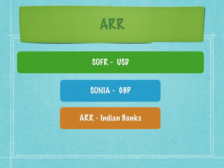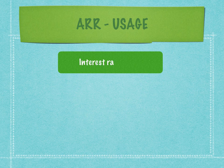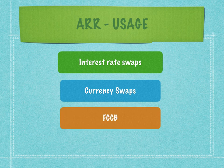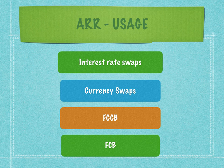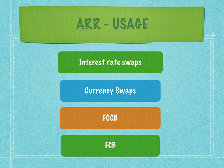Indian banks are going to use ARR — the Alternative Reference Rate. The ARR will be used by banks to value on a daily basis the MTM outstanding positions of interest rate swaps, currency swaps, foreign currency convertible bonds, and foreign currency bonds. The ARR will also result in the complete elimination of MAIBOR — the Mumbai Interbank Offer Rate — which was used by many banks as a reference rate up to 2021. From 2022, floating rate mortgages or floating rate loans will no longer reference MAIBOR but will use ARR.